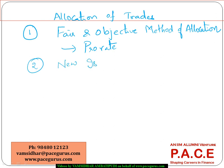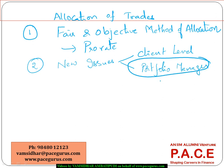For new issues such as IPOs, distribution should happen at the client level directly, rather than at the portfolio manager level. Currently, in most cases, new issues are distributed at the portfolio manager level, which allows the portfolio manager to allocate them in a biased manner. If allocation happens directly at the client level using a pro-rata method based on each client's proportion, it introduces greater objectivity into the process.